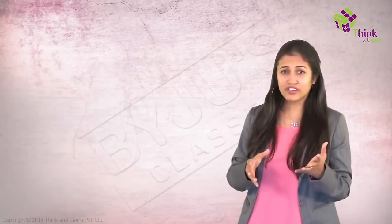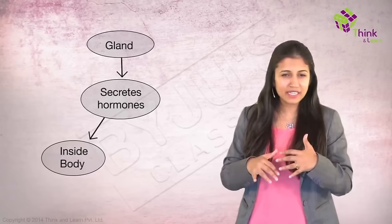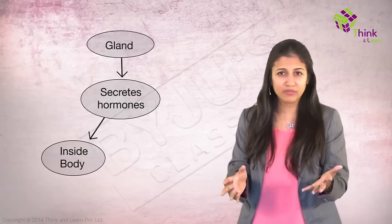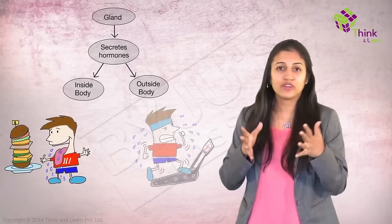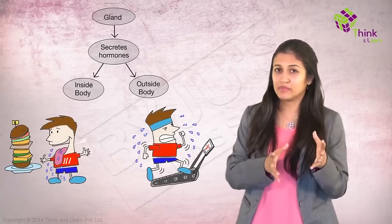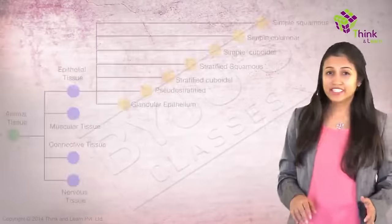A gland is an organ which just gives out stuff. The stuff that it gives out can either be retained inside the body or secreted outside the body, like salivary glands where saliva goes out, and sweat glands where sweat goes out. These are perfect examples of glands which secrete substances outside the body.